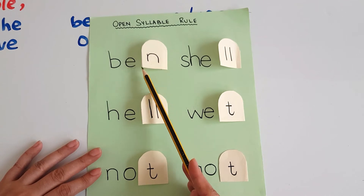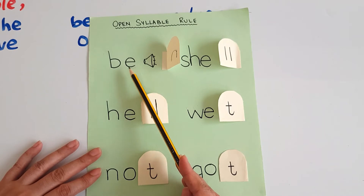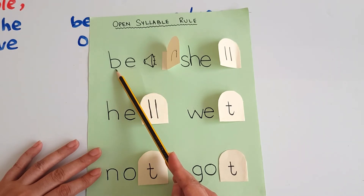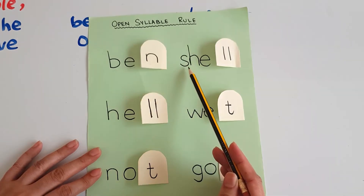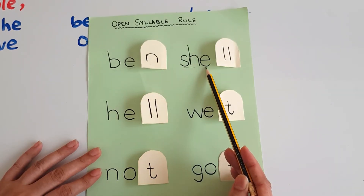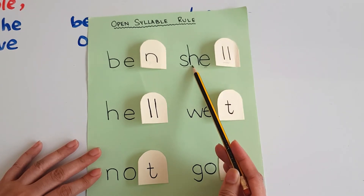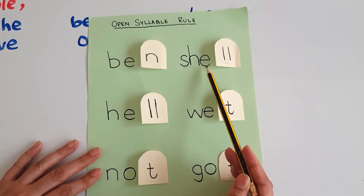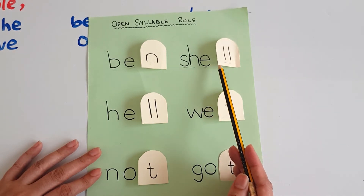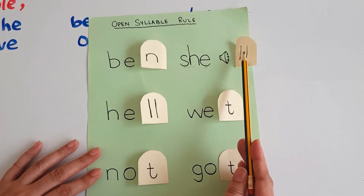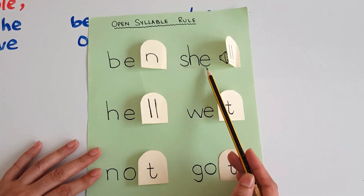But if I open the door, the vowel will shout out its name — 'E' — and the word will be 'be.' Look at this word: SH-EH — 'shell.' The vowel is closed with the consonant L: 'shell.' But if I open the door, the vowel will say its name and the word will be SH-E: 'shee.'